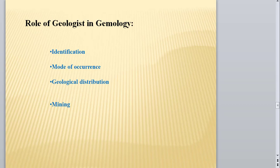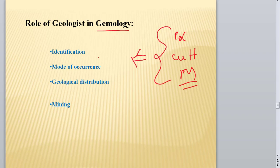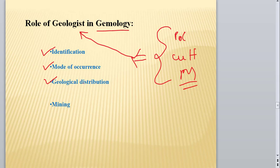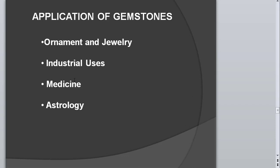What is the role of the geologist in gemology? Sometimes people say gemology only deals with the polishing process, cutting process, and marketing process. But in the background, the geologist determines where such minerals form, where they occur, what their distribution is, and how we can mine them. The geologist's roles include: identification of the mineral in the field and laboratory, determining mode of occurrence, geological and geographical distribution, and deciding whether a reserve is minable and economically profitable.